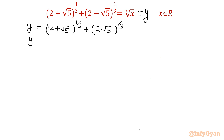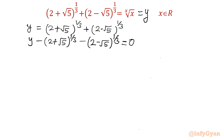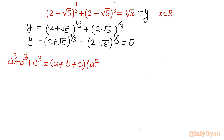Take all the terms to the left: y minus (2 + √5)^(1/3) minus (2 − √5)^(1/3) equals 0. Now I will use a unique algebraic identity: a³ + b³ + c³ equals (a + b + c) times (a² + b² + c² − ab − bc − ca) plus 3abc.